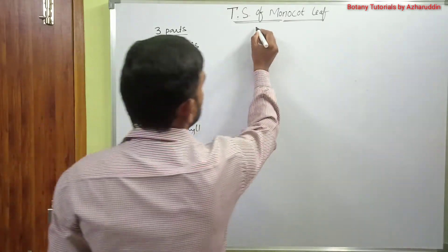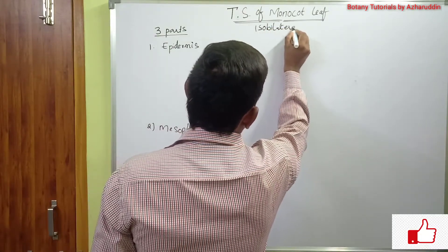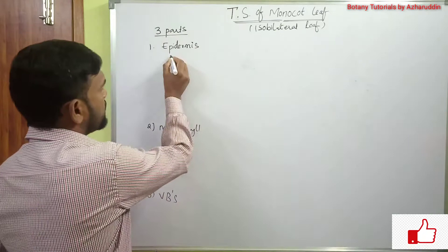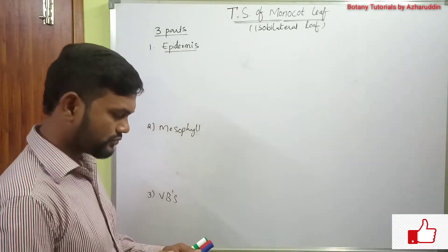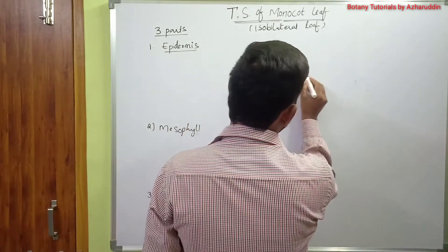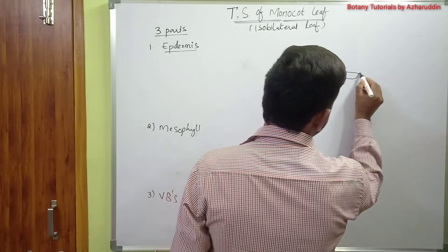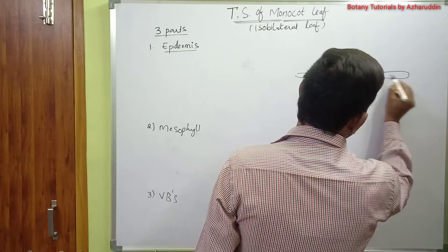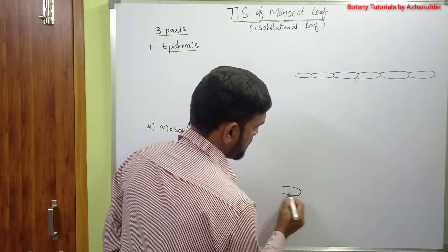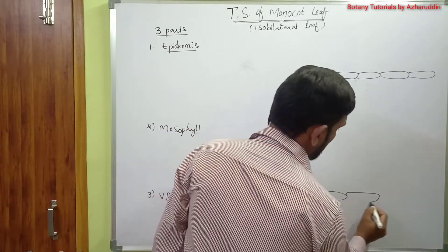It is also called isobilateral leaves. Coming to the first one, epidermis. Epidermis is the outermost layer, composed of a single row of cells. Epidermis is present on both surfaces — on the upper side and the lower side.